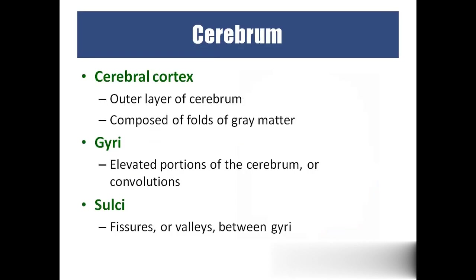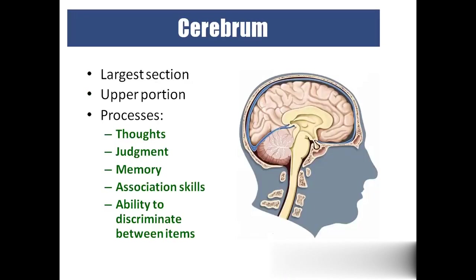The cerebrum has a cerebral cortex which forms the outer layer of the cerebrum, composed of folds of grey matter. We have two features: gyri and sulci. The elevations are called gyri, and the depressions are called sulci.